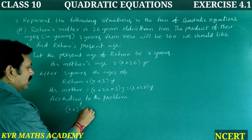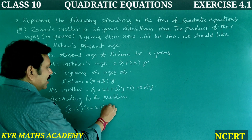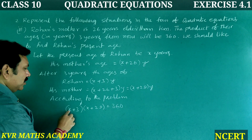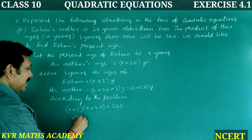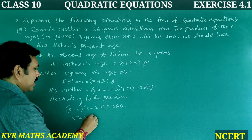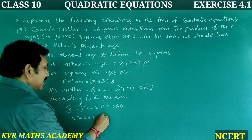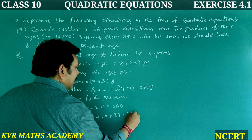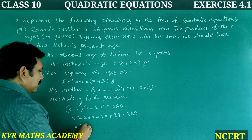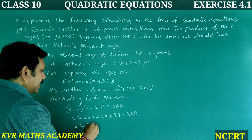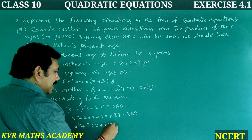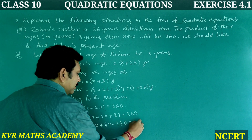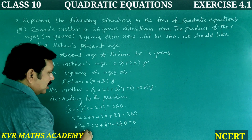According to the problem: (X + 3)(X + 29) = 360. Multiplying out: X² + 29X + 3X + 87 = 360, which gives X² + 32X + 87 = 360. Transferring 360 to this side: X² + 32X + 87 − 360 = 0.